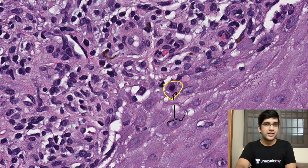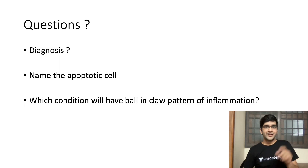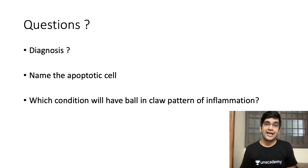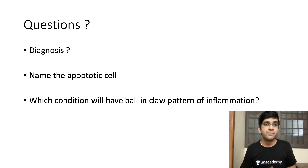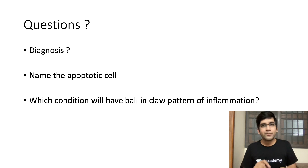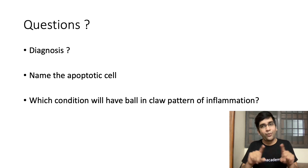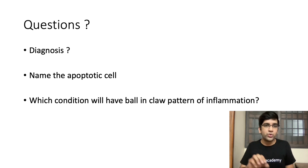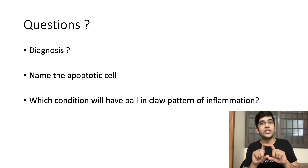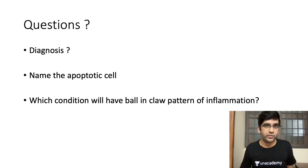Now I'm sure you must have made up your mind for the diagnosis. Today's questions: Tell me what the diagnosis is. The apoptotic cell I showed you in the last image has a name — I want you to comment on the name of that apoptotic cell. And one more question not related to this case: I have one more disease which will have a ball and claw pattern of inflammation, not like a band. I want you to comment on that disease as well.